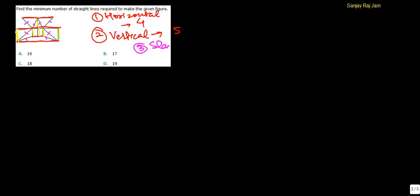So slanting lines are eight lines. So total number of such lines would be four plus five plus eight, seventeen straight lines. So these are the minimum number of straight lines which are required to make this figure. So option B is the correct choice.